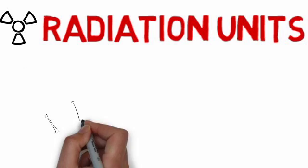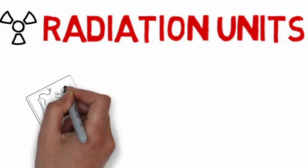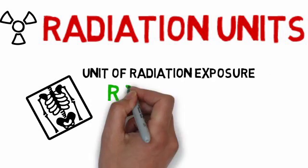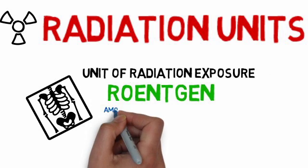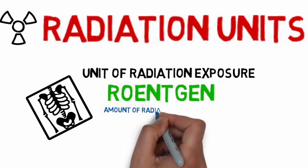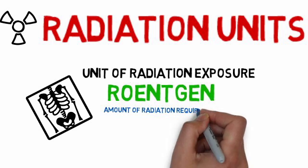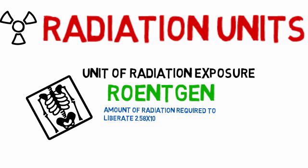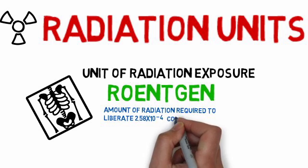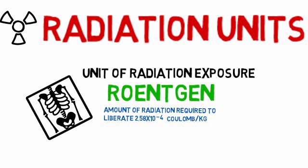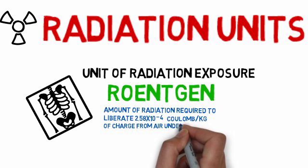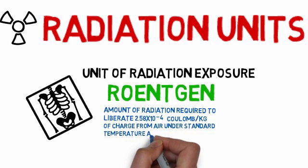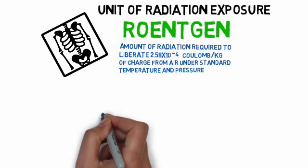Radiation Units. The unit of radiation exposure is the roentgen. That is, the amount of radiation required to liberate 2.58 × 10⁻⁴ coulombs per kilogram of charge from air under standard temperature and pressure.